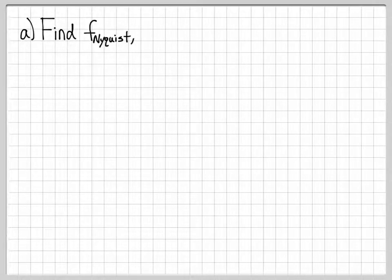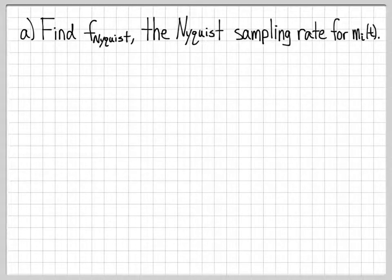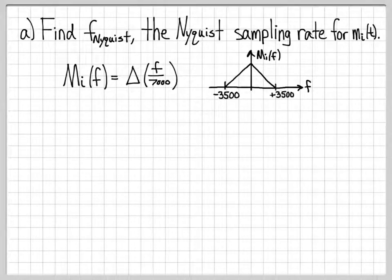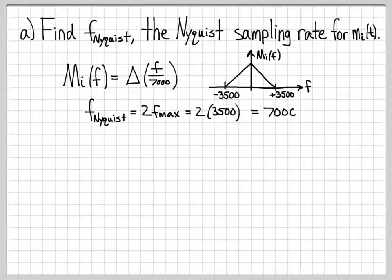In part A of this problem, we're going to compute the Nyquist rate of the individual user signals. So M_i(t) is the individual user signal. We know in the frequency domain that's represented as M_i(f), which we said was a triangle function. So if we sketch what this looks like, it's going to look like a triangle centered at 0 with a total width of 7,000. So that means it goes from minus 3,500 to 3,500 for a total width of 7,000 hertz. And computing the Nyquist rate for this user is very easy because the Nyquist rate is always just twice the largest frequency. So we can look and find the largest frequency, which we call f_max. f_max is 3,500. So 2 times 3,500 is 7,000 hertz. So for each user, we need to sample their signal at a rate of 7,000 times per second.